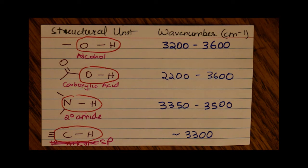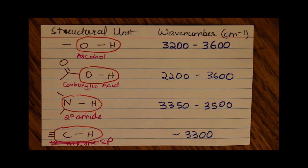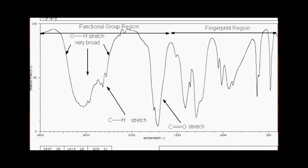In a carboxylic acid, the O-H bond shows up in the range between 2200 and 3600 inverse centimeters, and looks something like this. Notice that it is a broad peak.